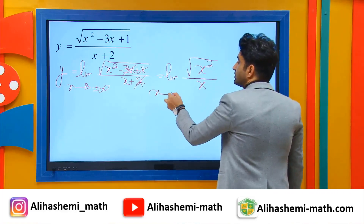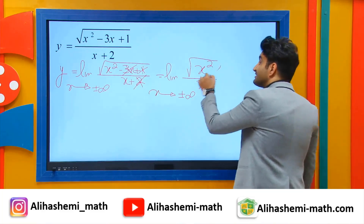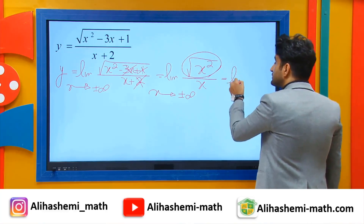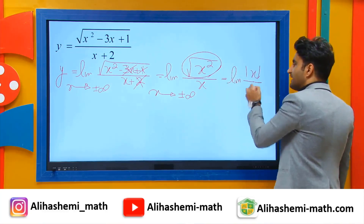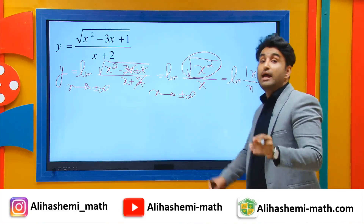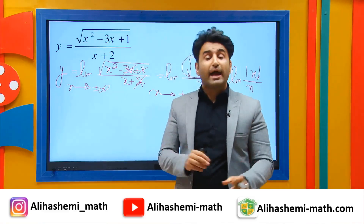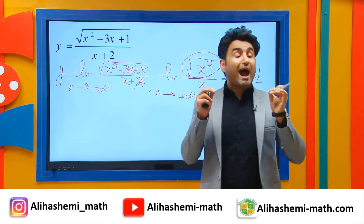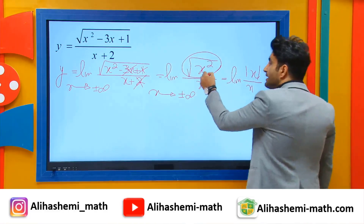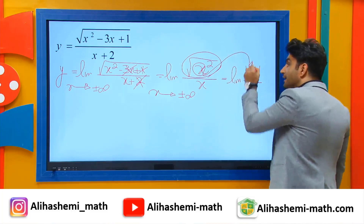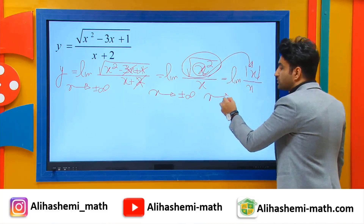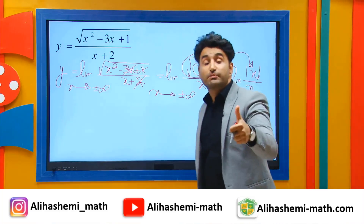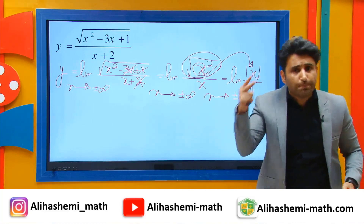As x approaches positive and negative infinity, the square root of x squared is equal to the absolute value of x. Friend, this is very important — the square root of x squared is not equal to x, it's equal to the absolute value of x. So you must put x inside the absolute value. Now, x approaches from positive infinity and negative infinity, which means you must split your answer into two parts.